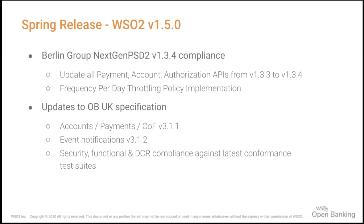The frequency per day throttling will allow banks to limit third-party service providers' requests to a specific API resource. This will avoid unnecessary high demand on bank systems and will not allow TPPs to abuse the consent given to them by their users.